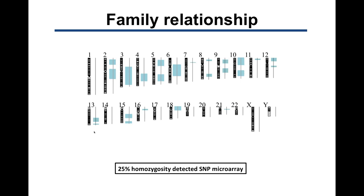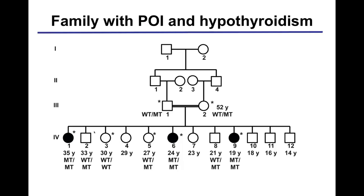Sequencing will also reveal the relationship between family members, including previously unknown relatedness. An example shows a SNP array where blue blocks next to chromosomes indicate regions of homozygosity where paternal and maternal chromosomes are identical. When 25% of the genomic material between paternal and maternal genomes inherited is homozygous, this individual is highly likely to be a result of first-degree incest. These tests will identify family relationships, and it is very important that couples understand this before testing.